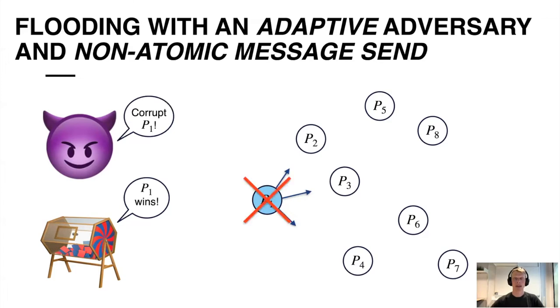Furthermore, once he corrupts him, he can actually retract the message and thereby prevent the delivery of the block to all other honest parties. Therefore, this doesn't work.